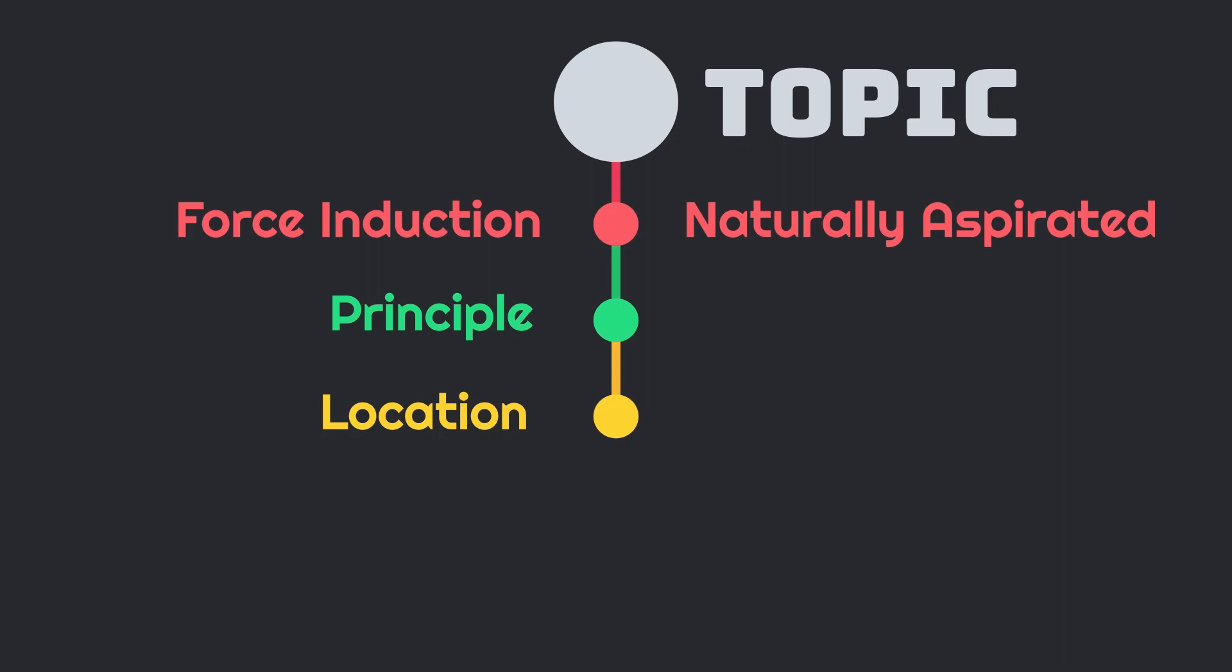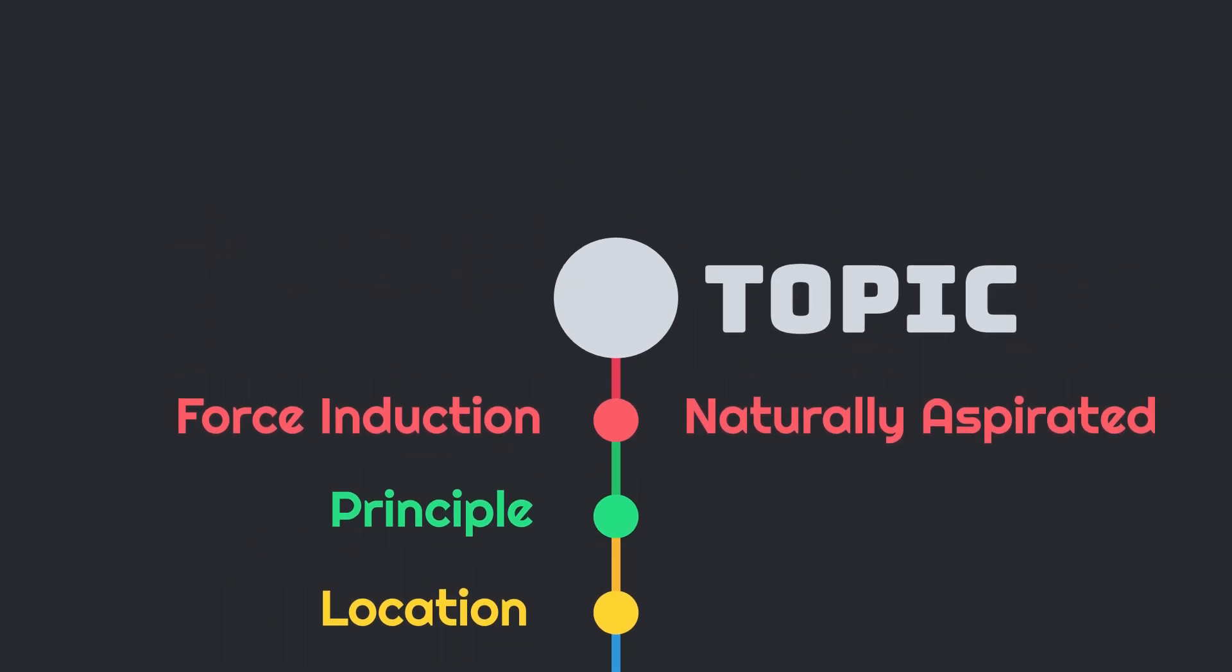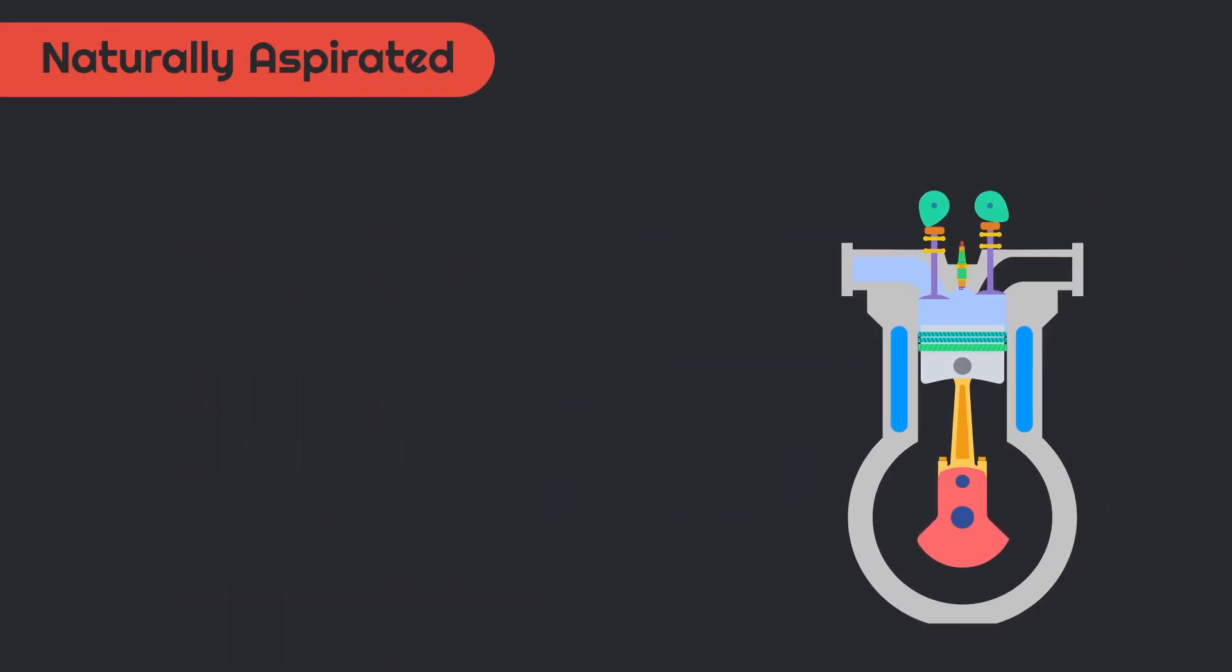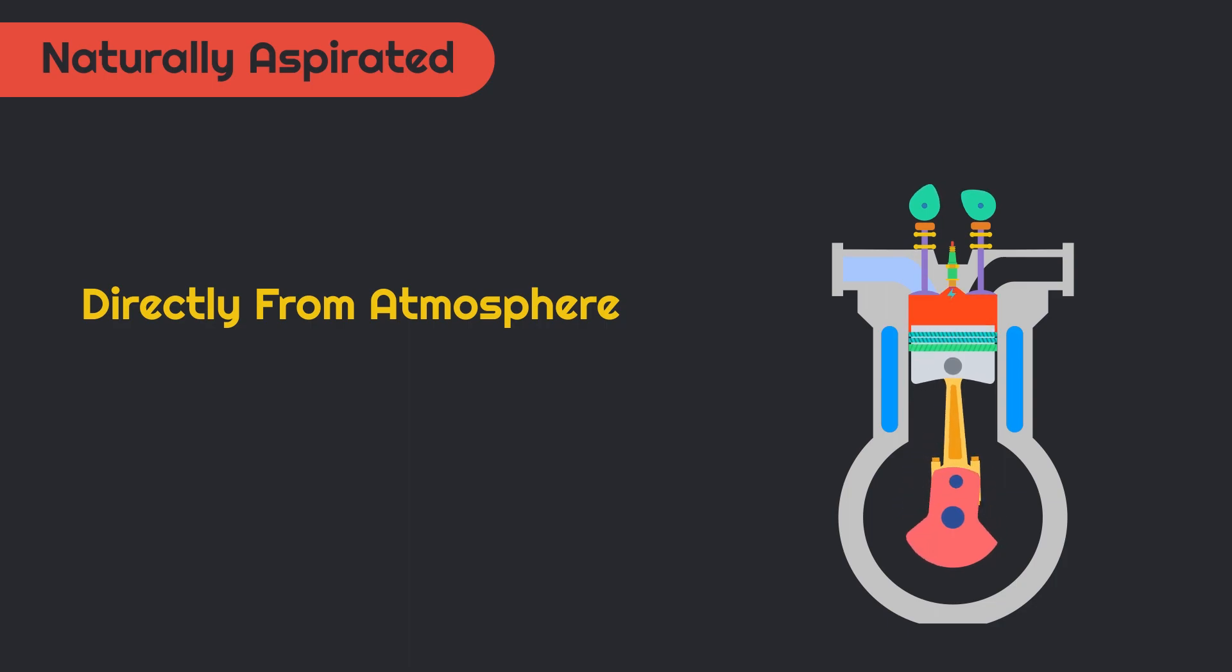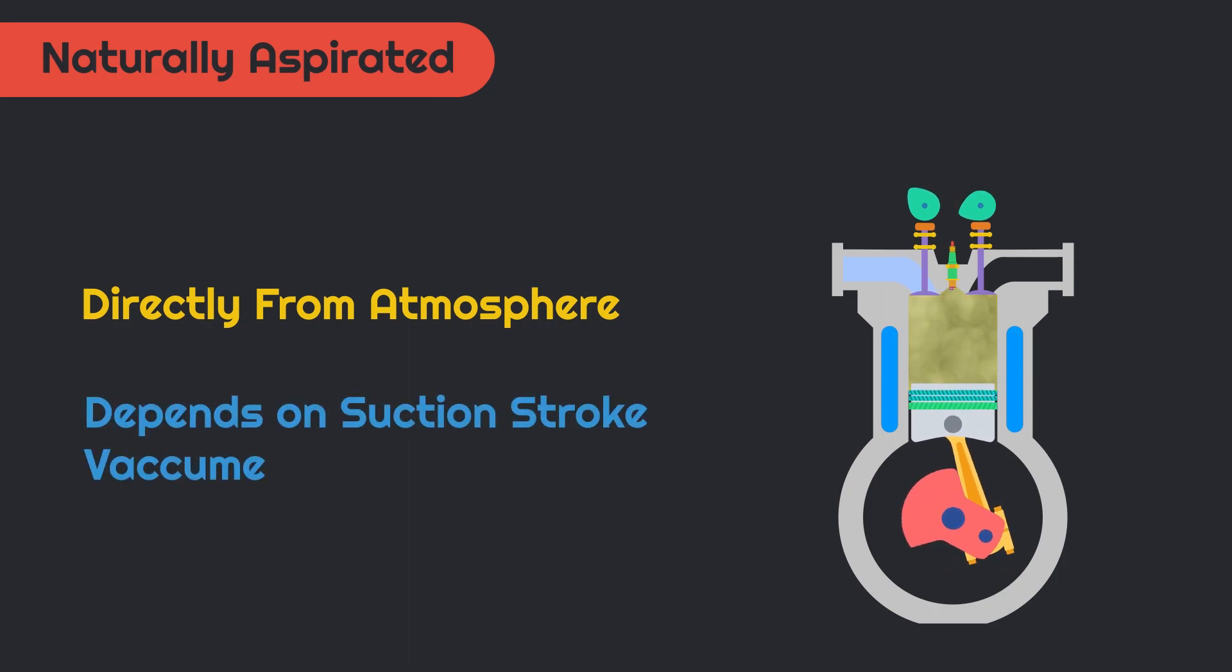An engine in which the air during suction stroke is directly sucked from atmosphere without any induction or force is known as a naturally aspirated engine. In this kind of engine, no external force is applied during the suction stroke.